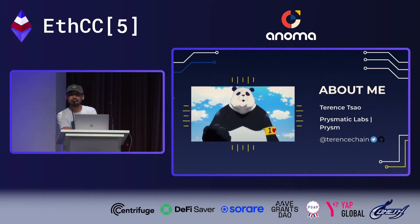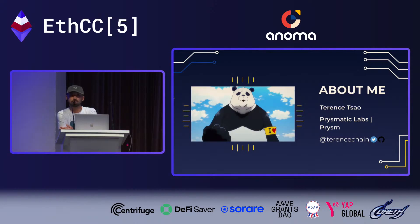Hi, I'm Terence. I work at Prismatic Labs. My main work is on Prism — it's one of the five consensus layer clients, written in Go. I've been working on proof of stake since early 2019 for Ethereum, known as the beacon chain. Nowadays I'm mostly working on the merge. I'm looking at post-merge MEV extraction and data sharding. It's nice to be here.